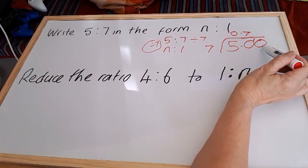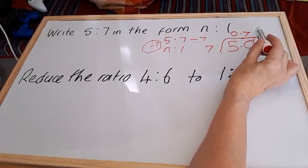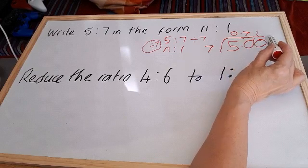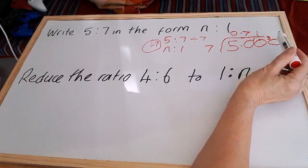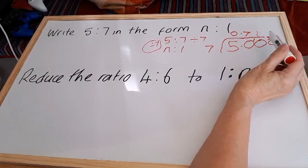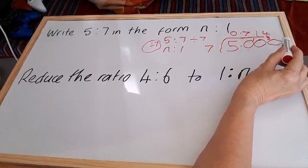7 into 10 goes 1 and that will leave us 3. And then 7 into 30 goes 4 and that will leave us 2.